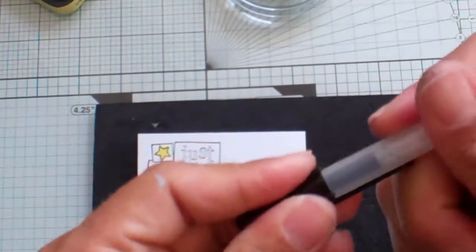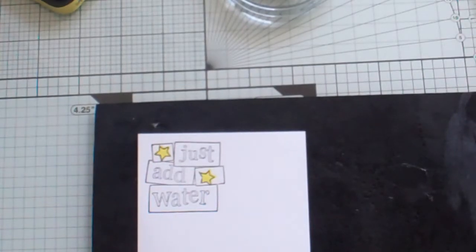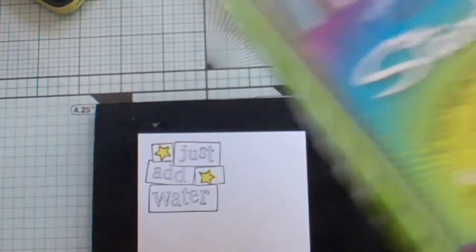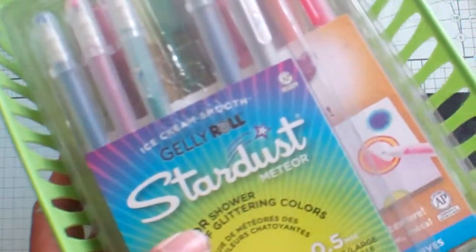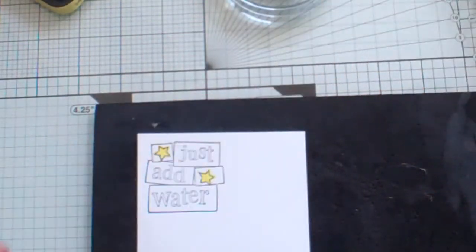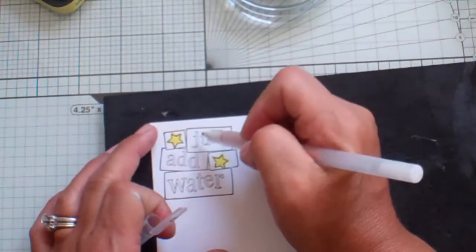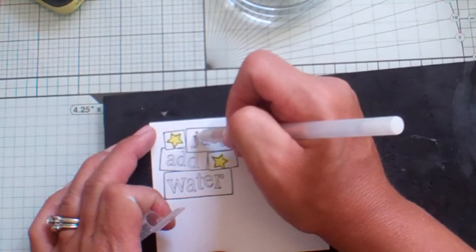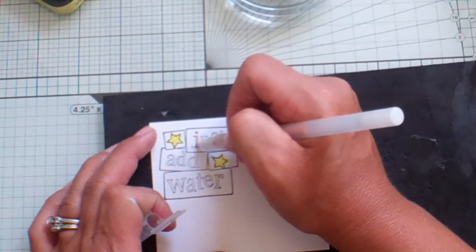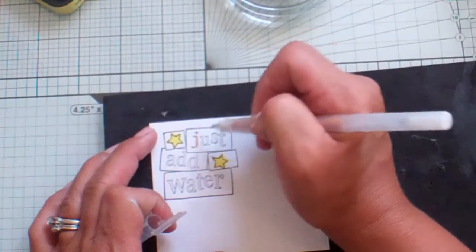Then I took these Stardust markers and colored in the words 'just add water'. I'm not going to do that now because you know how to color. You could use anything you have - your Copics,